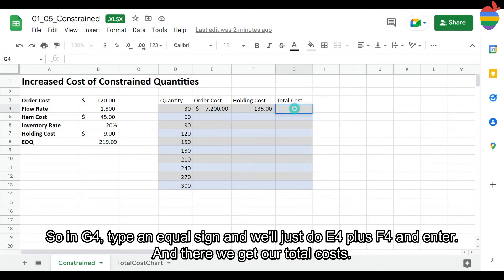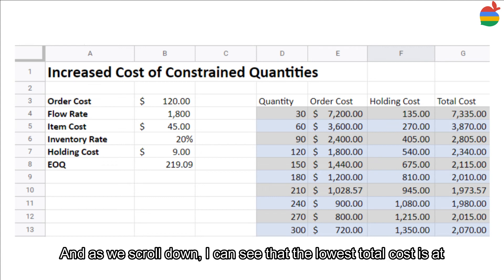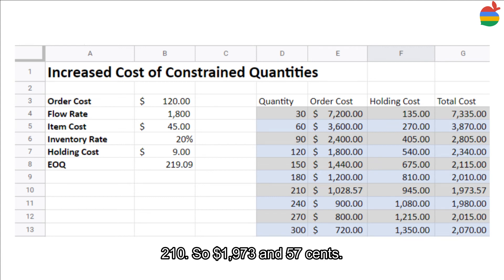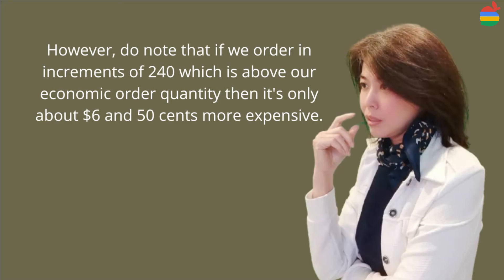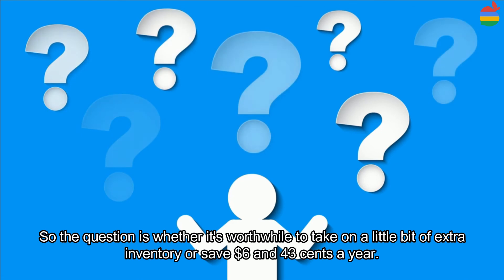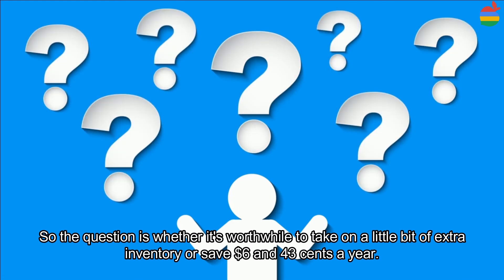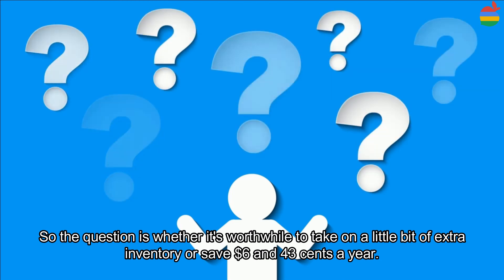In cell G4, I type equals E4 plus F4 and press Enter to get the total cost. Scrolling down, the lowest total cost is at $1,973.57, which corresponds to ordering 210 units. However, note that if we order in increments of 240 — which is above our economy order quantity — it is only about $6.50 more expensive. So the question is whether it's worthwhile to carry a bit more inventory or save $6.43 a year.